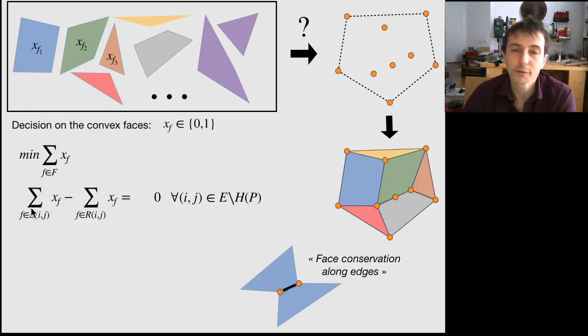if you have a face on the left side of an edge, meaning if this quantity is equal to 1, then you must cancel it out with a face on the right side of an edge. So this is like a face conservation constraint along edges.